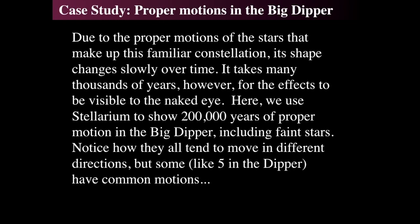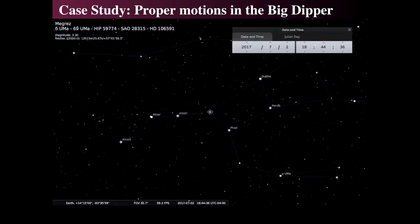If you take the Big Dipper — the stars of Ursa Major are pretty close and part of a moving group. Using the program Stellarium, over the course of 200,000 years we can see how the Big Dipper will change. Some stars move in different directions, but the five in the Dipper roughly have common motions. Starting from today and jumping ahead 24,000 years, we see that things have moved — the handle has steepened and the box has squished a little.